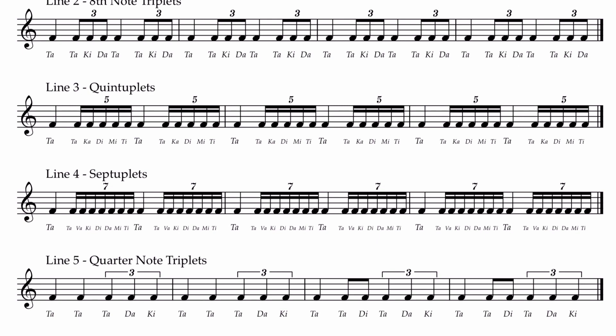Remember, don't group them. They need to be evenly spaced. Takida ta. Takida ta. Takida ta. Takida ta. Doesn't matter how fast or slow they are, they need to be evenly spaced. So that is line two: eighth note triplets.